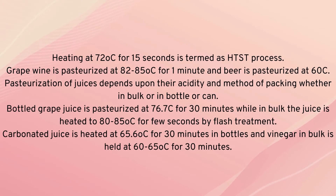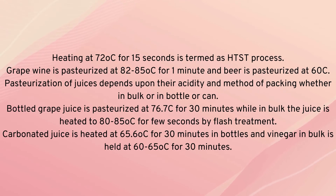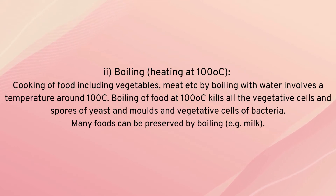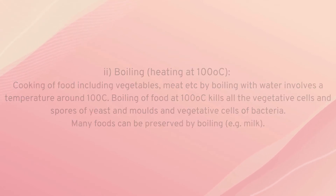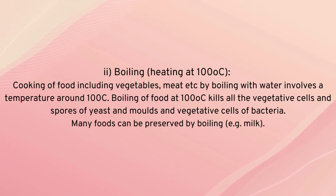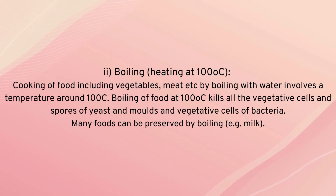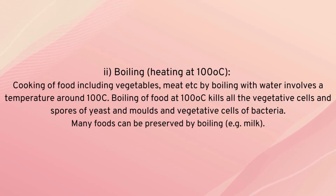Carbonated juice is heated at 65.6°C for 30 minutes, and vinegar-preserved foods are held at 60–65°C for 30 minutes. Boiling involves heating at 100°C — cooking of food, vegetables, meat, etc. by boiling with water at around 100°C. Boiling is successful in killing all vegetative cells of bacteria, molds, and yeasts, and many foods can be preserved by boiling; for example, milk.